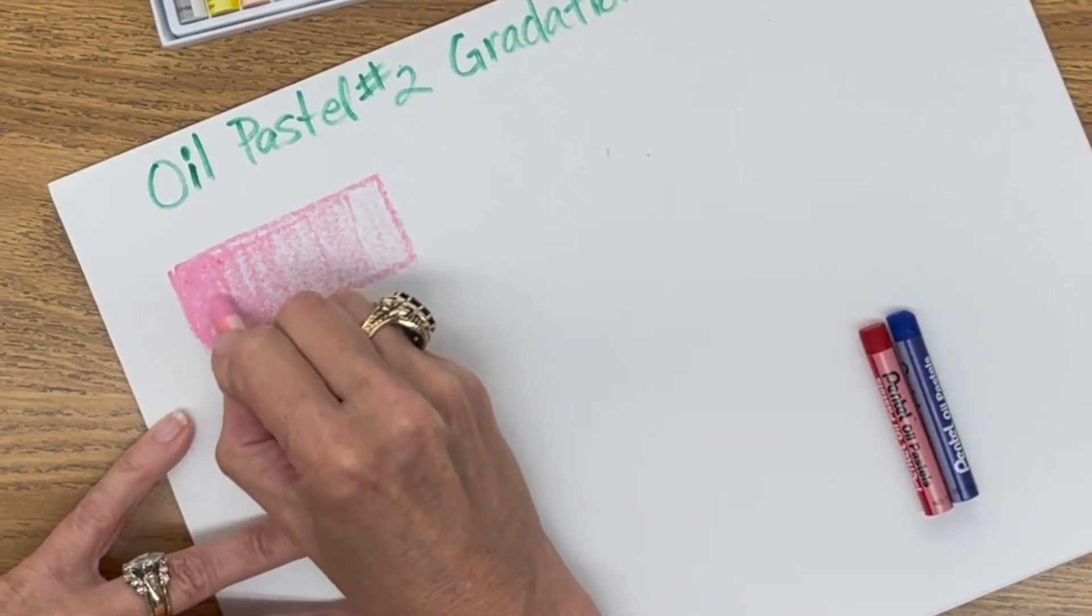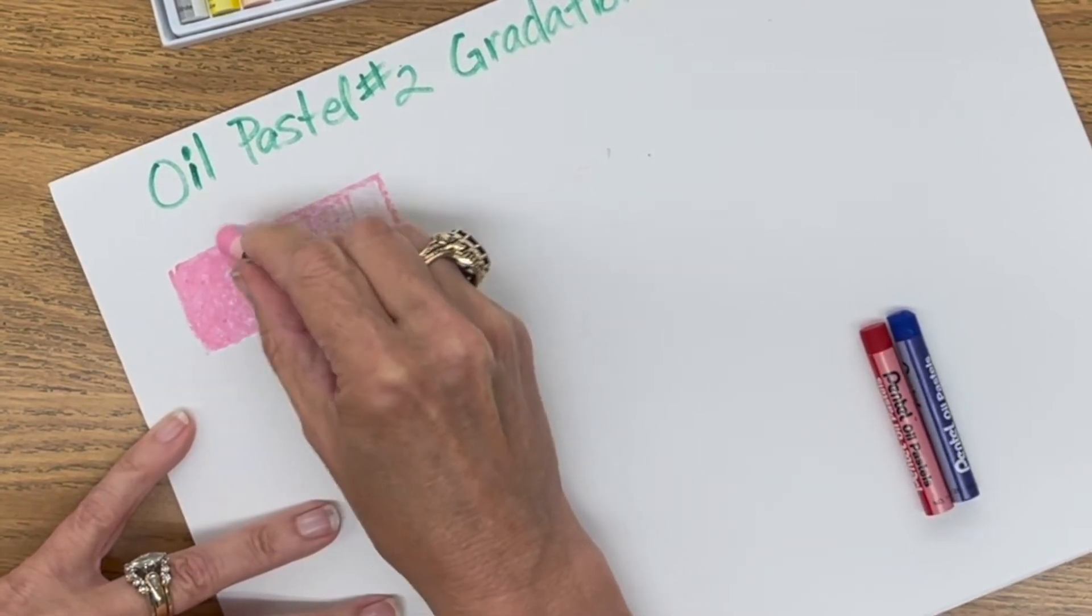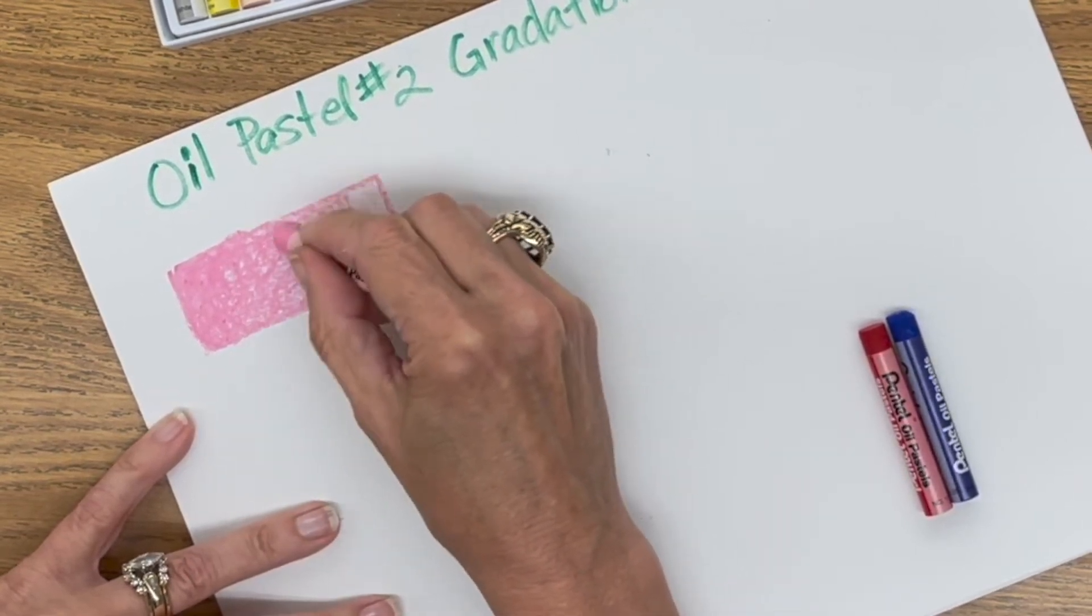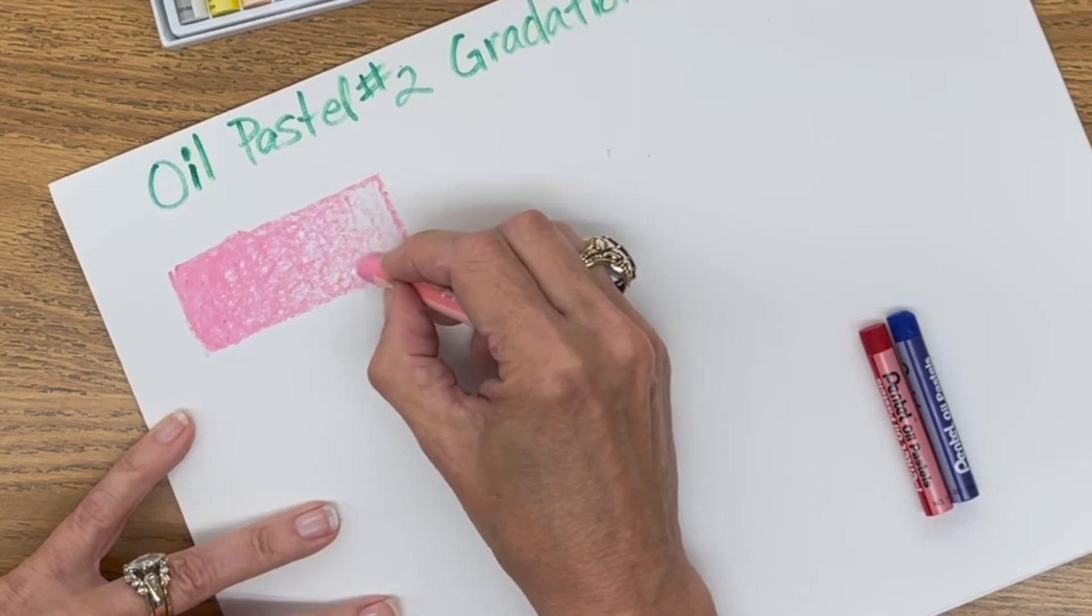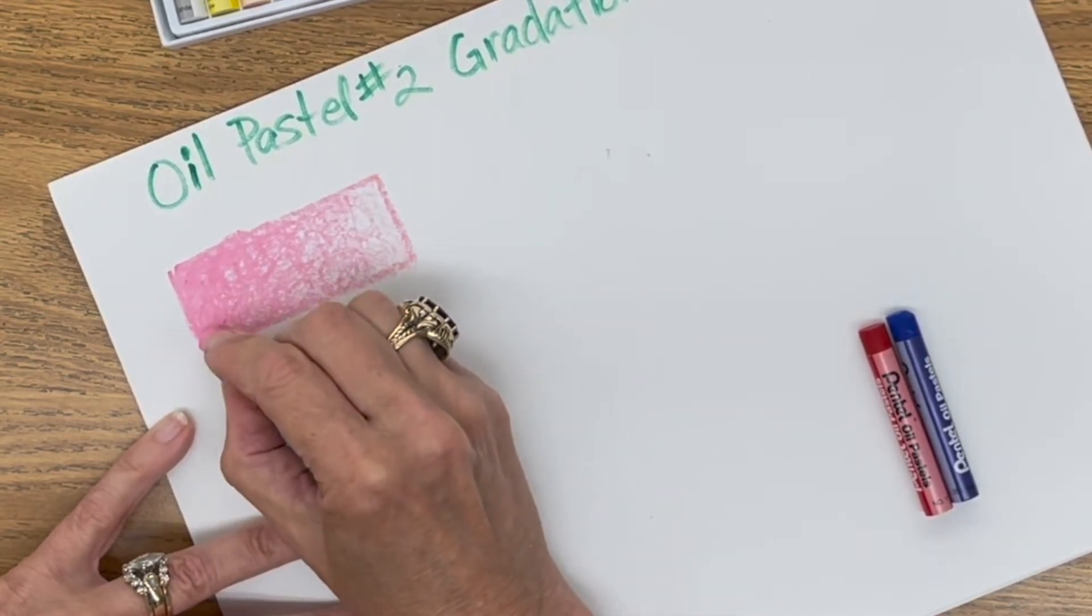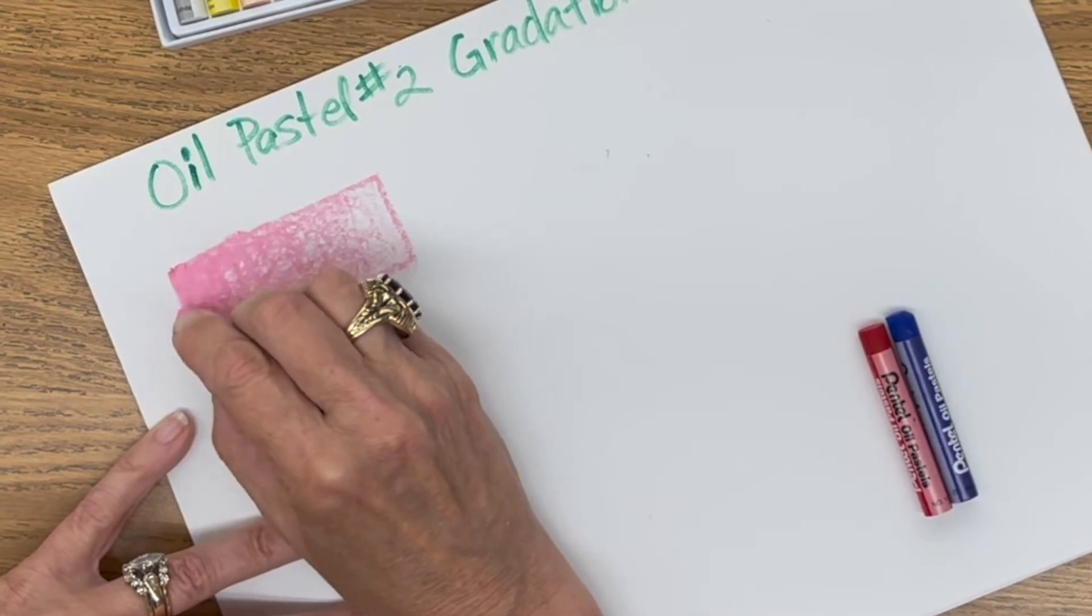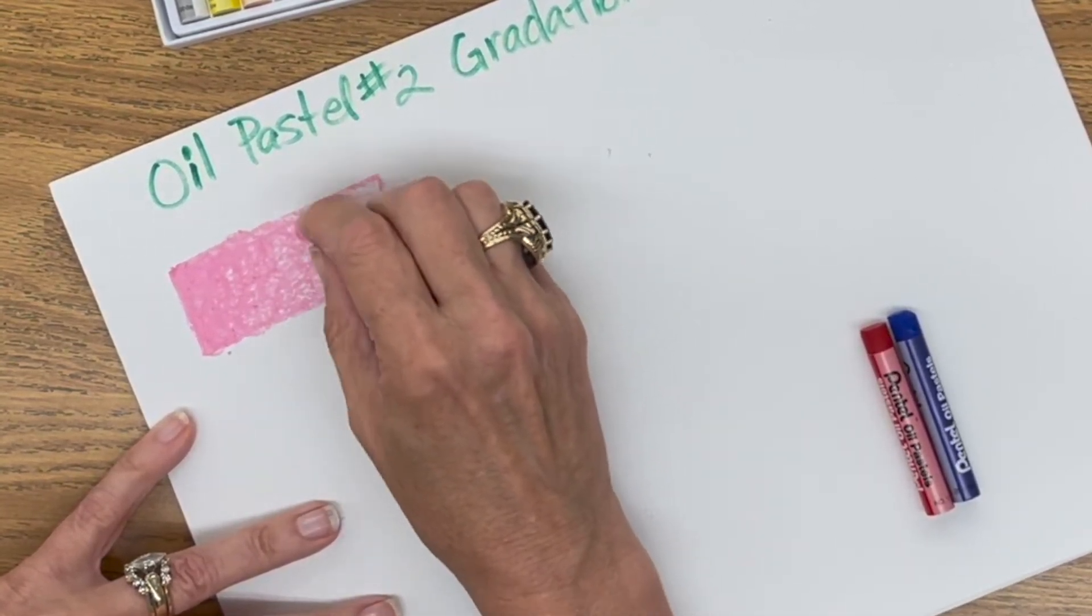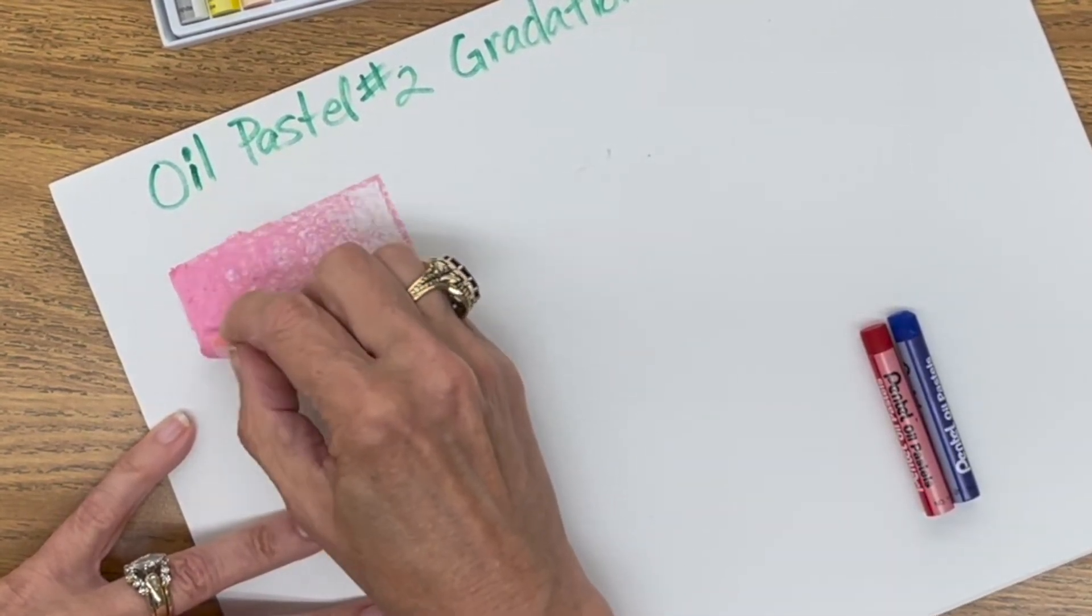And I am going to start back at my dark end and layer up. Pressing kind of lightly and getting lighter as I go across. And back to the beginning, the dark end.